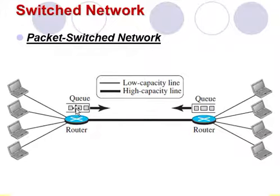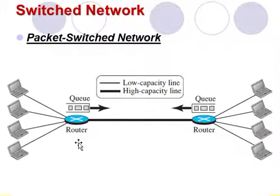This figure shows a small packet switch network that connects four computers on one side to four computers on the other side. Assume that the capacity of the thick line is only twice the capacity of the data line connected from the computer to the router. If only two computers — one on each side — need to communicate, there is no waiting for the packets.